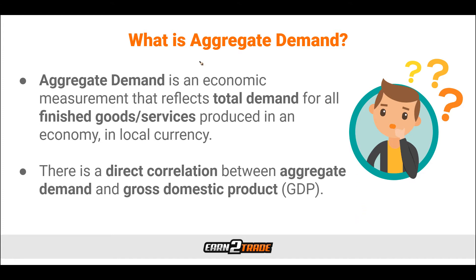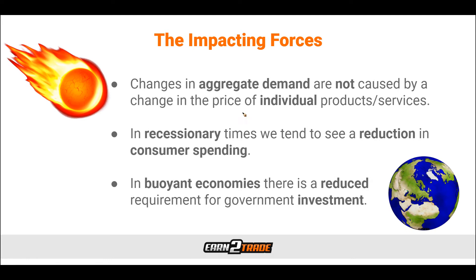So first things first, what is aggregate demand? The definition is relatively simple to understand. It's an economic measurement that reflects total demand for all finished goods and services produced in an economy, listed in local currency. There is a direct correlation between aggregate demand and gross domestic product, even though they are not the exact same thing. The gross domestic product reflects the total amount of goods and services produced in an economy in local currency, adjusted for inflation. Changes in interest rates, consumer demand, and other factors will shift the curve to the left or to the right. There is an ongoing argument amongst economists as to whether an increase in consumer demand prompts an increase in production, or whether an increase in production prompts an increase in demand — which came first, the chicken or the egg?